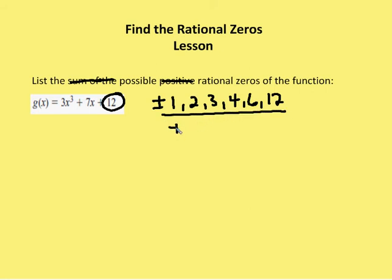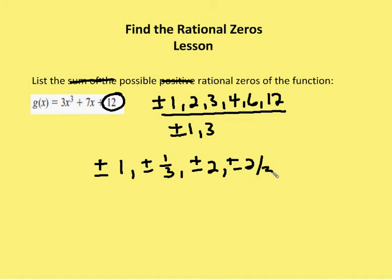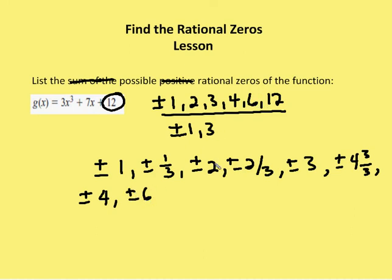Over the factors of the leading coefficient, which would be plus or minus one and three. So my possible rational zeros are going to be plus or minus one, plus or minus one-third, plus or minus two, plus or minus two-thirds, plus or minus three. I would say three-thirds, but that's equal to one — we already have that. Plus or minus four-thirds, plus or minus four, plus or minus six, plus or minus six-thirds which is two — already have that — plus or minus twelve-thirds which is four — already have that — and plus or minus twelve. So these are the possible rational zeros of this polynomial based on the rational zero theorem.